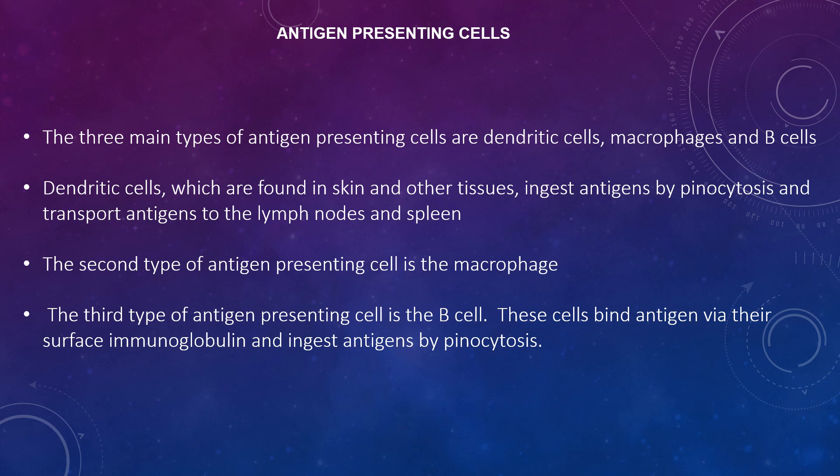The third type of antigen-presenting cell is the B cell. These cells bind antigen via their surface immunoglobulin and ingest antigens by pinocytosis. Like macrophages, B cells are not as effective as dendritic cells in presenting antigen to naive T cells. However, B cells are very effective in presenting antigen to memory T cells, especially when antigen concentration is low, due to the high affinity with which the surface immunoglobulin binds antigen.